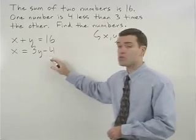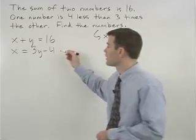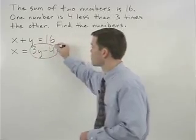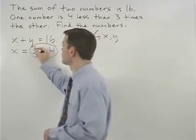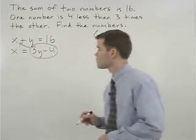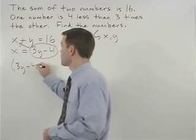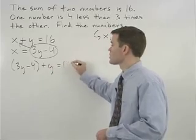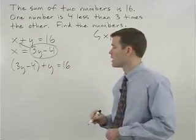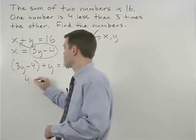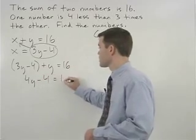Since x equals three y minus four, we can substitute three y minus four in for the x in the first equation to get parentheses three y minus four plus y equals sixteen. And solving from here, four y minus four equals sixteen.